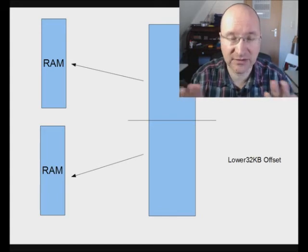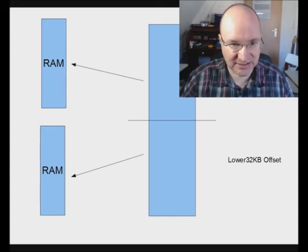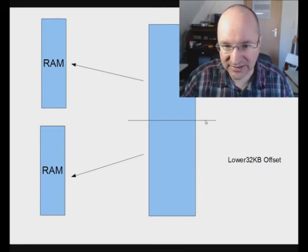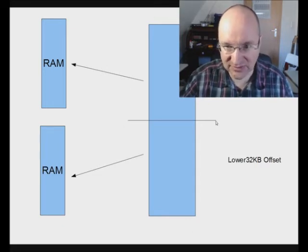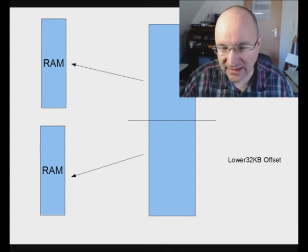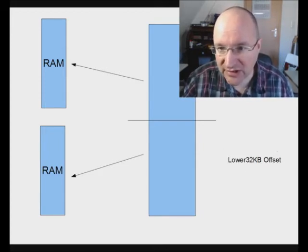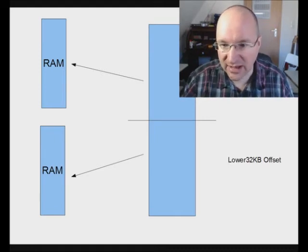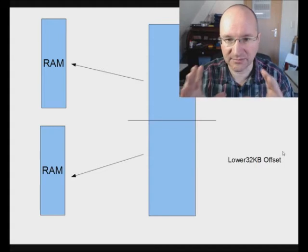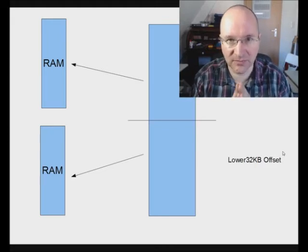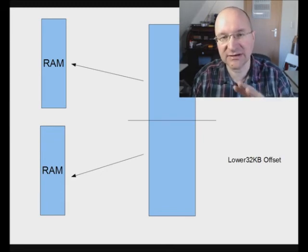In reality, the memory the controller sees is cut in half: an upper 32-kilobyte area and a lower 32-kilobyte area. Inside the processor there is a mapping with an offset for the upper part and the lower part. This enables you, for example, to map only the upper part to another area while leaving the lower area where the code is located, so the processor can continue executing.